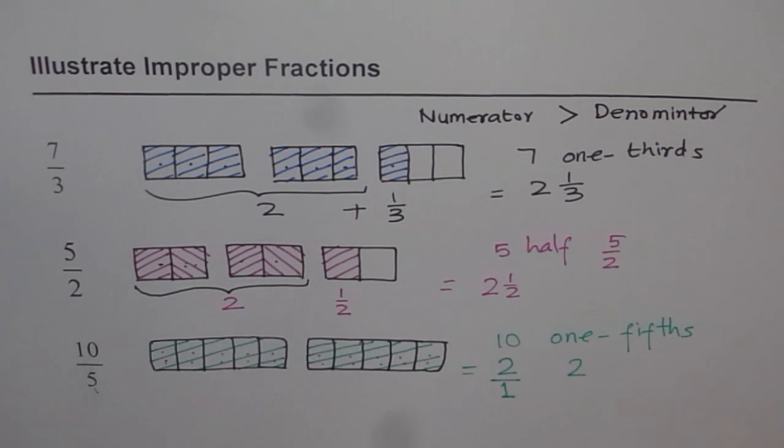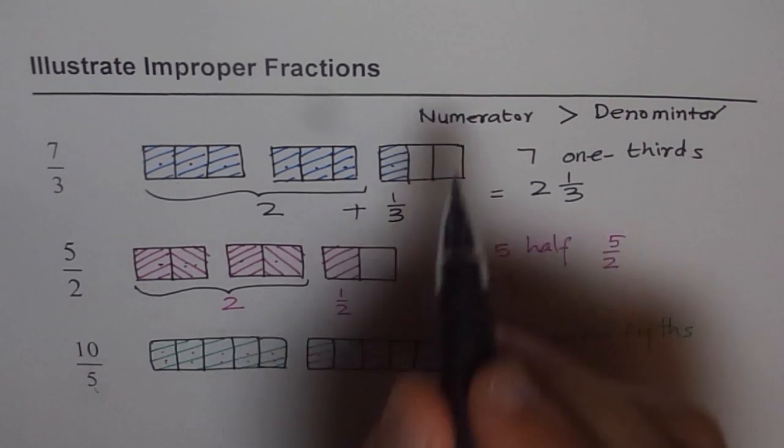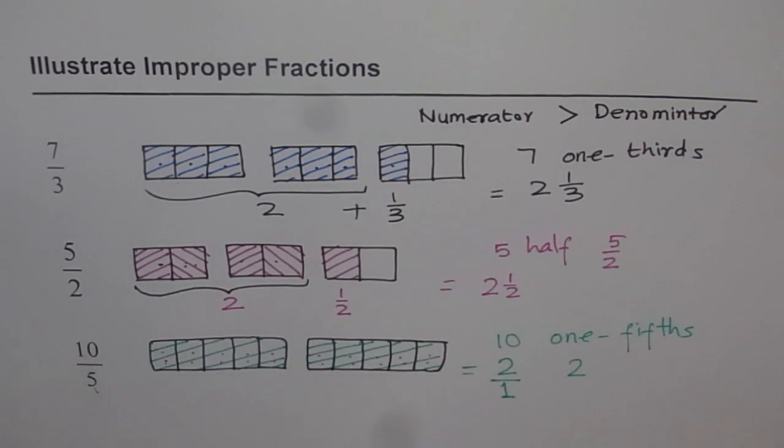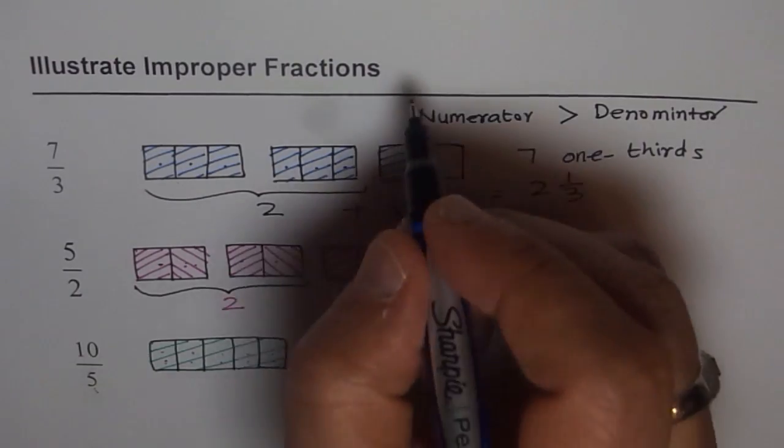So that is how we can write improper fraction as a mixture of whole numbers and fractions. I hope you appreciate this. Now as an exercise, what you can do is, I'll give you some improper fractions. You can illustrate them with the help of a diagram. Once you do that, you will also see how to write improper fraction as a mixed number, right?